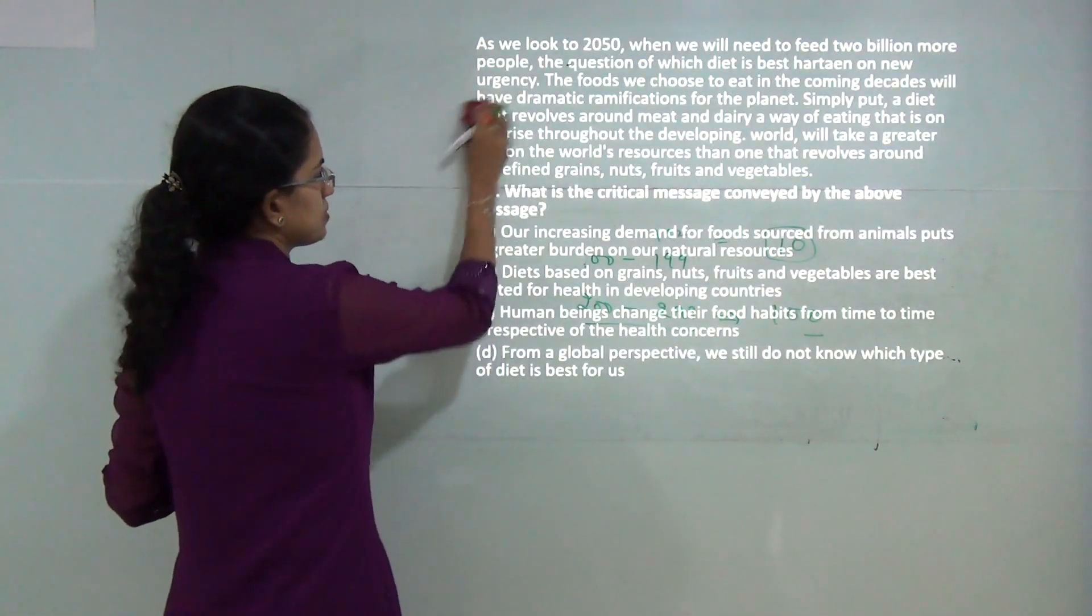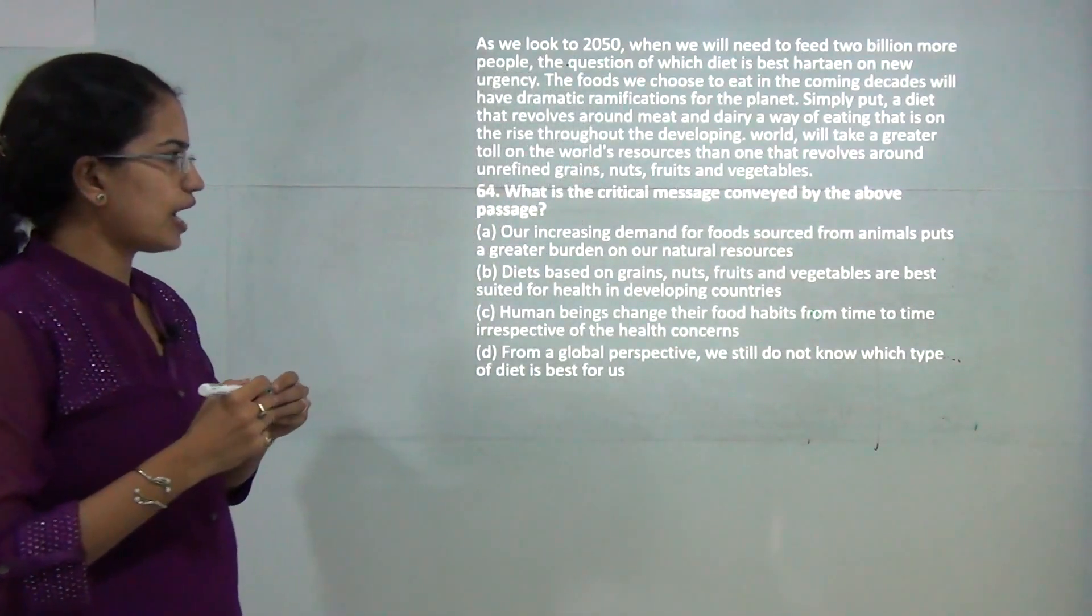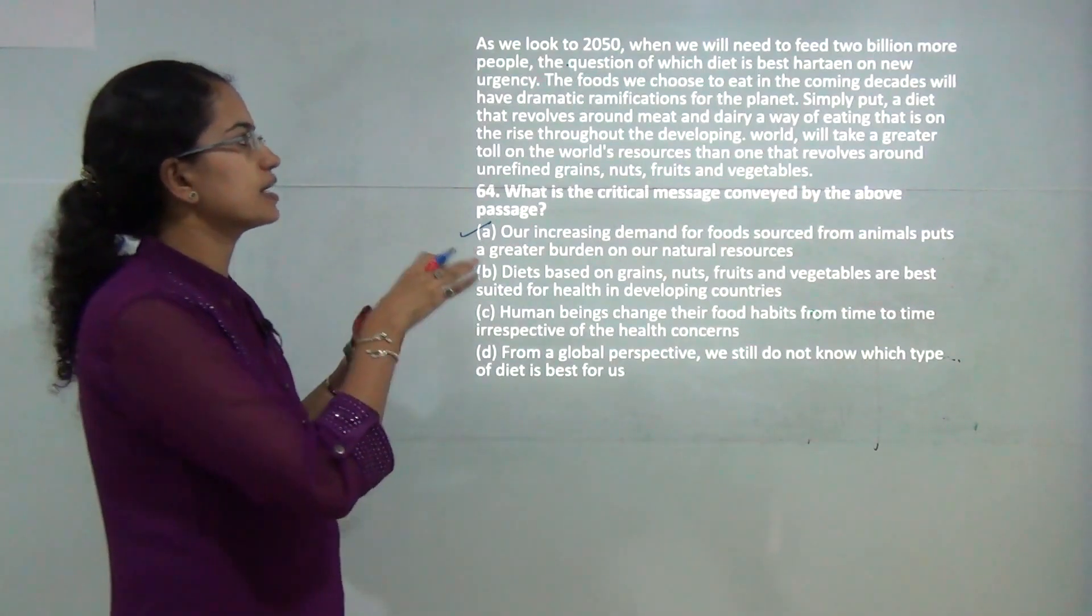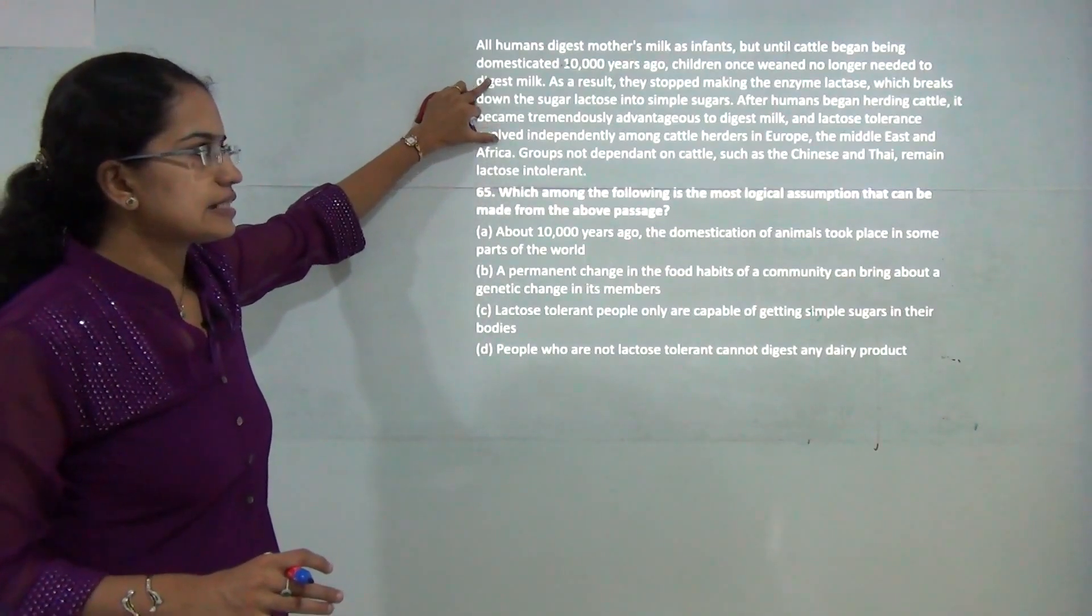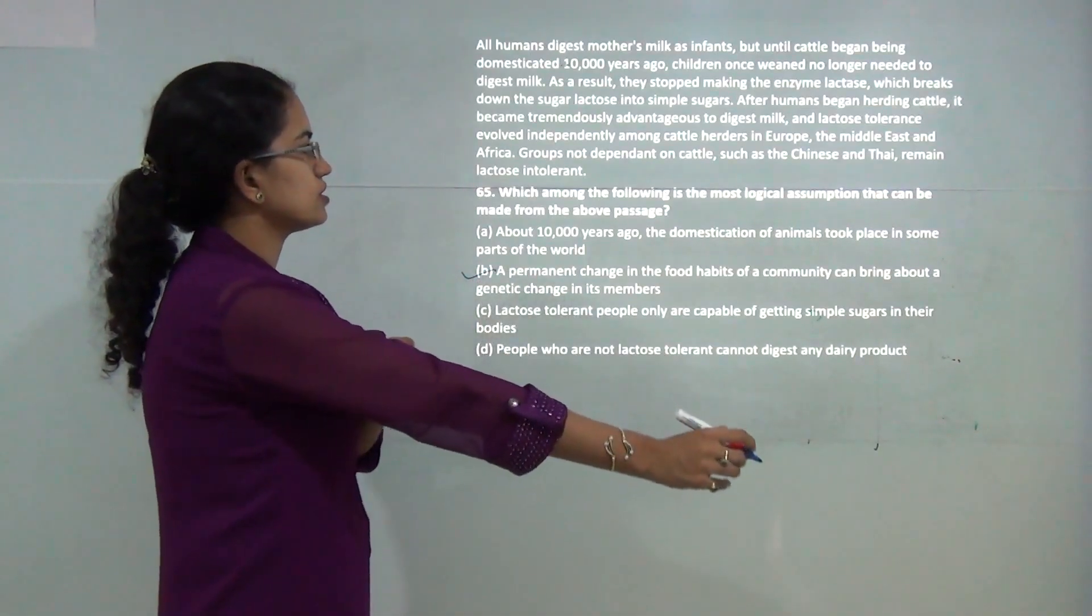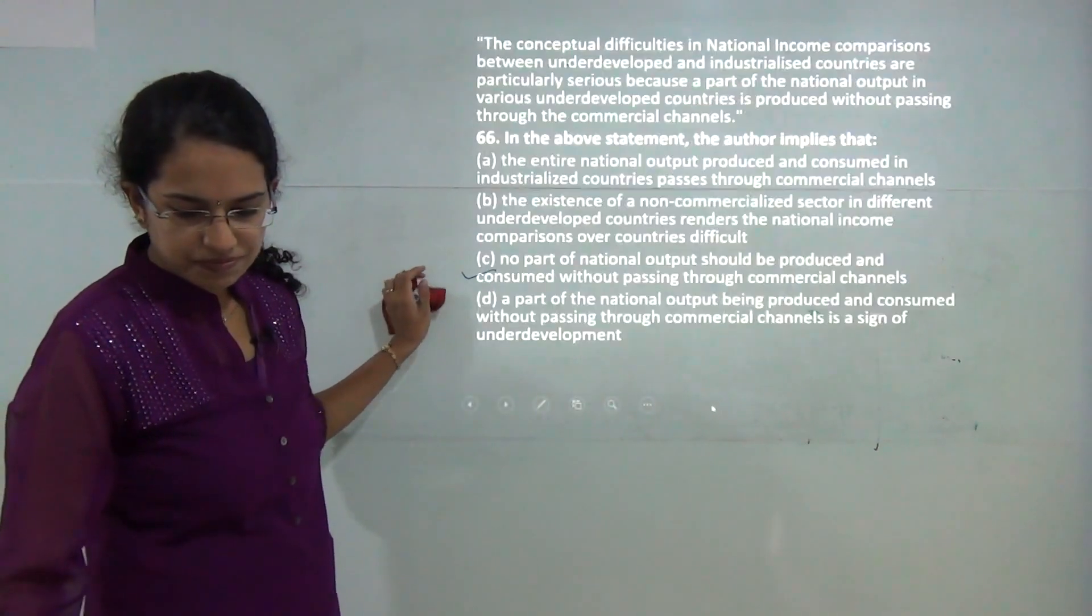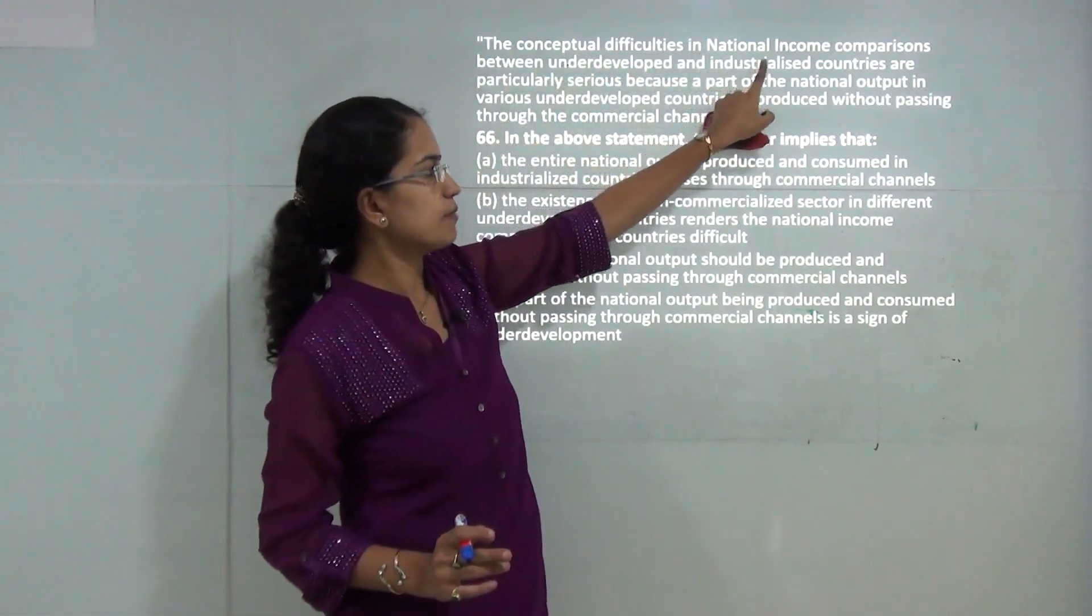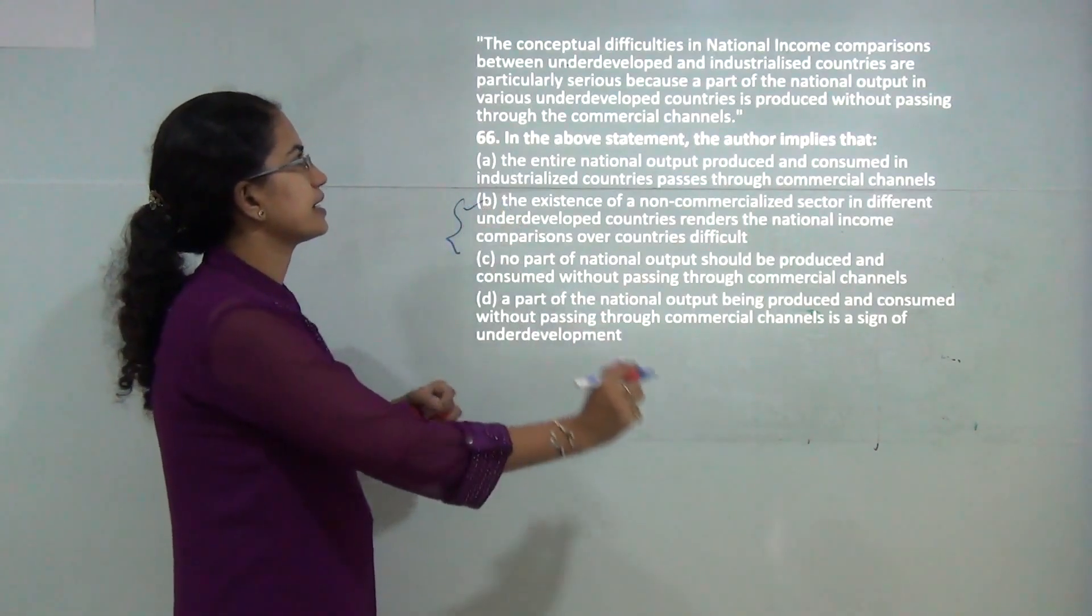These questions are based on passages. The first passage discusses demand for animal-based food. The correct answer is that our demand for food from animals puts a greater burden on natural resources. The next passage is about genetic changes in food habits. Some species are lactose intolerant while others became lactose tolerant. The third passage explains conceptual difficulties in national income comparison due to non-commercialized sectors in underdeveloped countries.